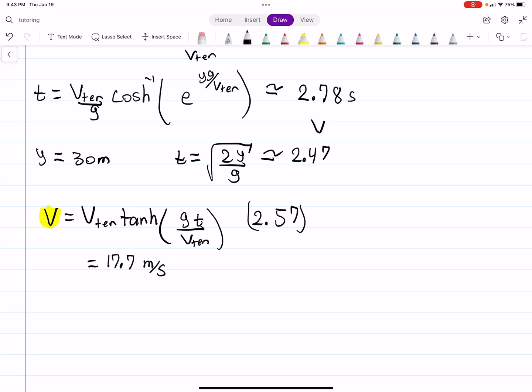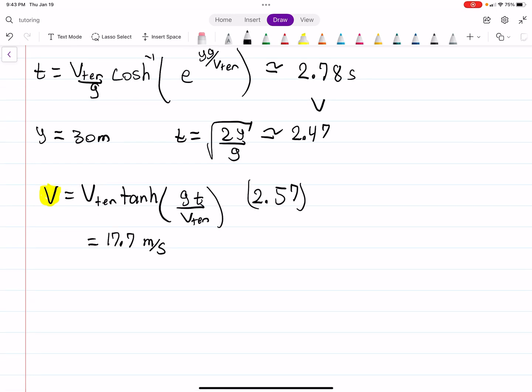So now you know how fast it's going when it hits the ground. If you wanted to know how fast it was going when it hits the ground in a vacuum, well, you could just use conservation of energy and say that one half mv squared equals mgy. The masses drop, and you can multiply by 2 and square root both sides. And you get V is equal to the square root of 2gy. And if you plug that in, you get about 24.2 meters per second. And again, that makes sense. That's bigger because there's no drag force accelerating the baseball up. So that also makes sense.